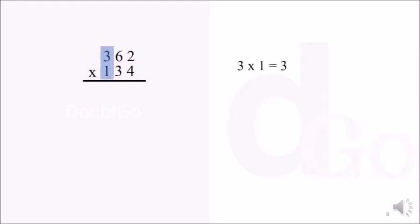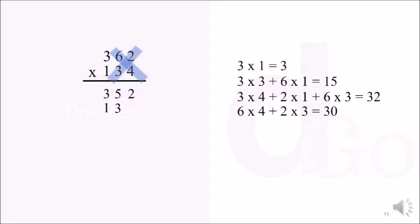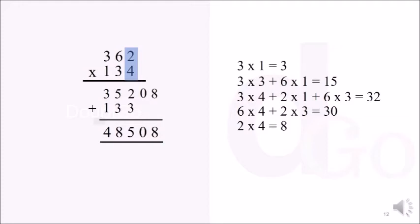First we multiply 3 × 1, which gives 3. Then we do a crosswise multiplication of 3 × 3 and 6 × 1 and add them to get 15 — we put 5 and carry 1. Then we multiply 3 × 4, 1 × 2, and 6 × 3 and add them to get 32 — we put 0 and carry 3. Then 4 × 2 gives 8, so we put 8. Adding all of these together gives us 48508, which is our answer.